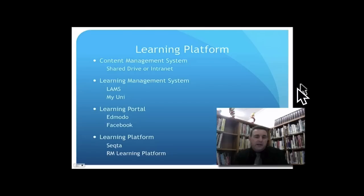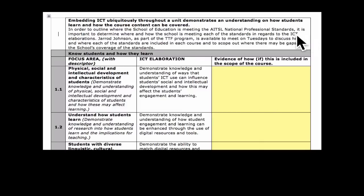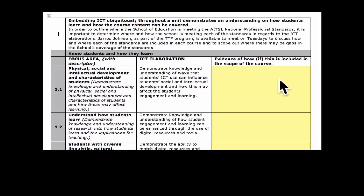You get out what you put in. At the end of it, here's an example of the standards — I've got Standard 1: Know the Students and How They Learn, and under 1.1 I'm looking at physical, social, and intellectual development characteristics of students. This is the ICT elaboration, which was developed in collaboration with many others, and you need to reflect on this. Here is where you would put in your own idea — this is done on a Word document, but it's a way of collecting all your information together.